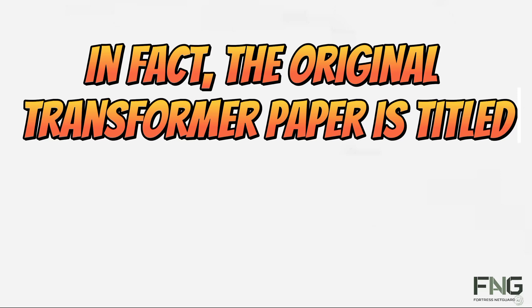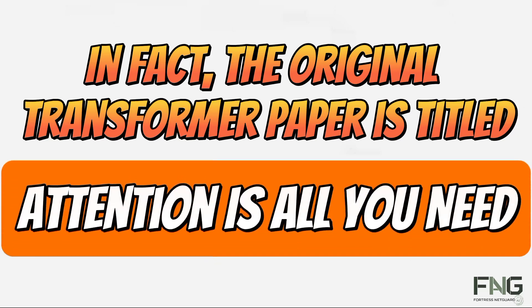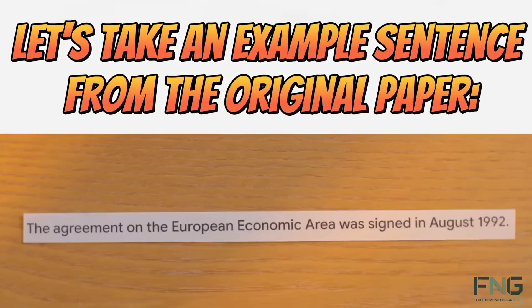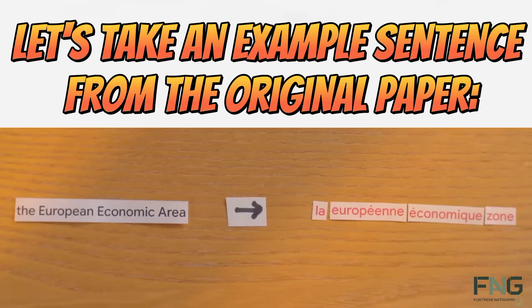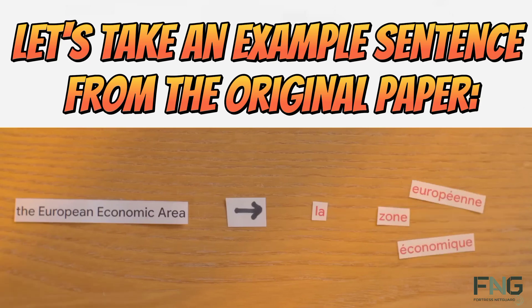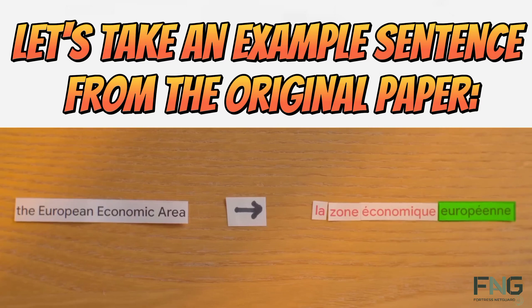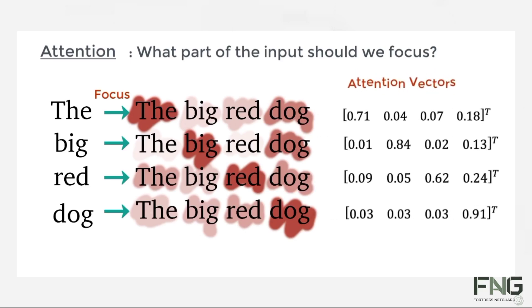Another key innovation is attention, a concept widely used in modern machine learning. In fact, the original transformer paper is titled 'Attention is All You Need.' Let's take an example sentence from the original paper: 'The agreement on the European Economic Area was signed in August 1992.' Now imagine translating this sentence into French. One incorrect approach would be to translate each word individually. However, French word order can differ and gender agreement between words is also significant. This is where attention comes into play. It allows the model to consider every word in the input sentence when making translation decisions, resulting in more accurate translations.